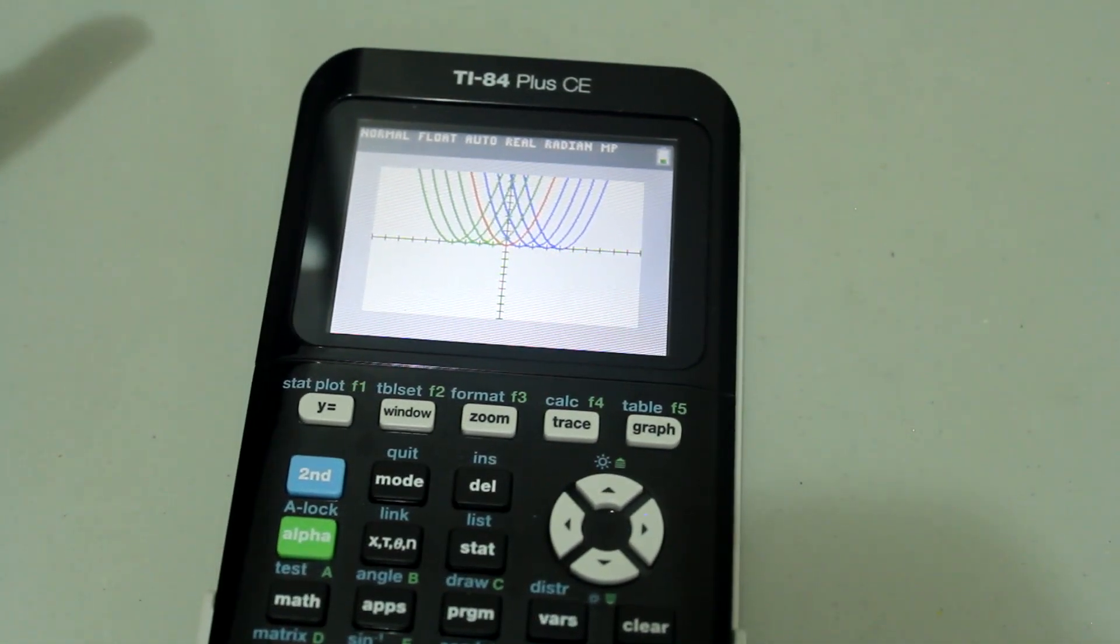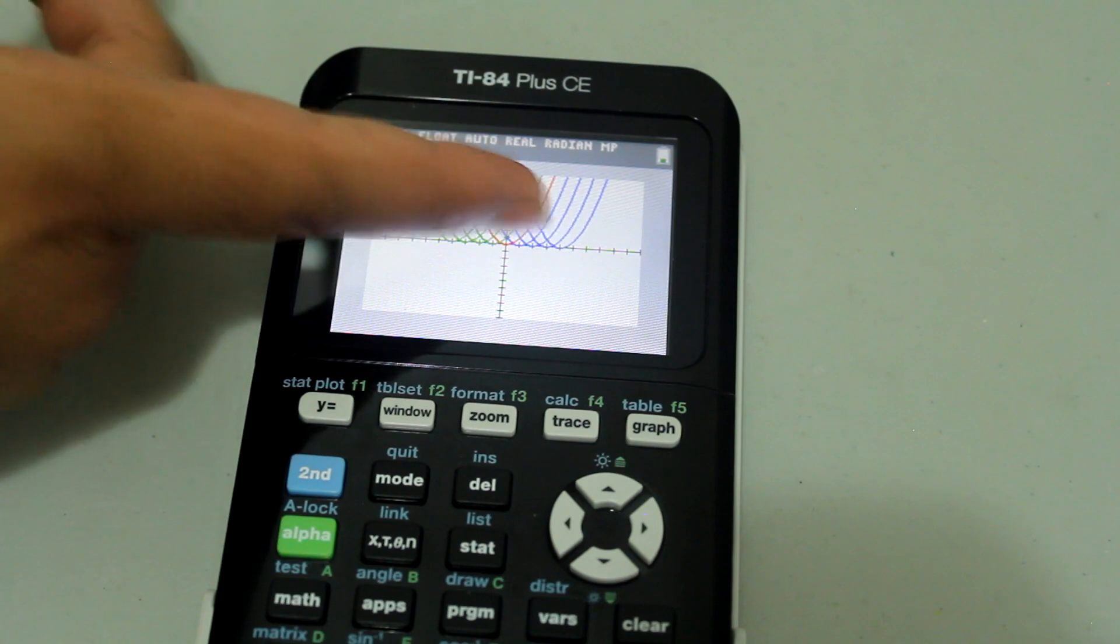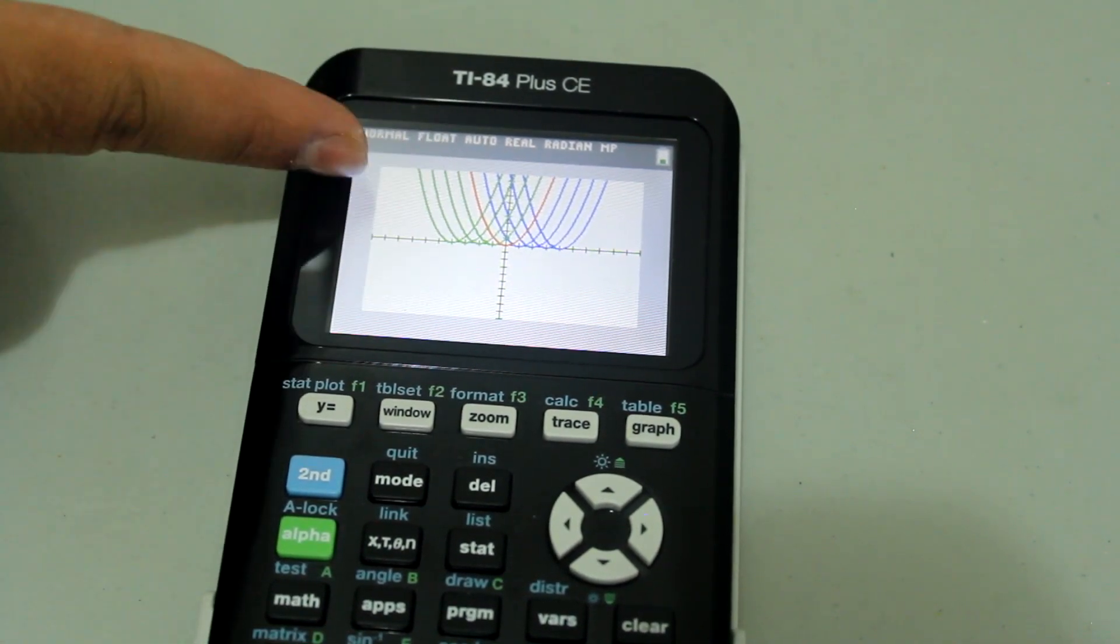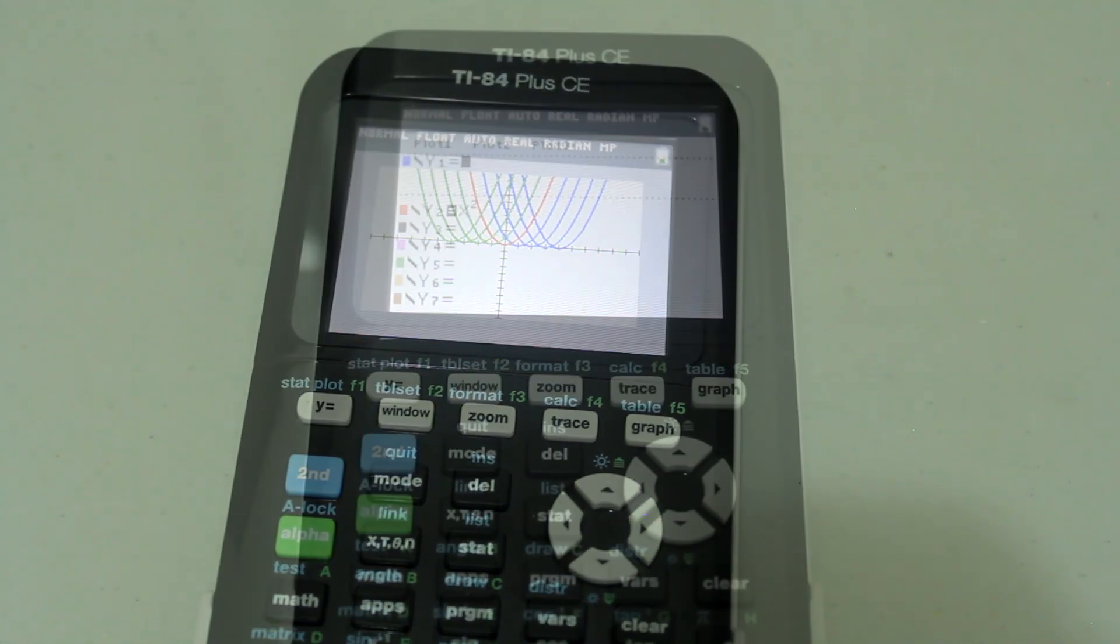And now you see that the graphs are shifted horizontally. The blue indicates a shift to the right, the green are shift to the left and the red is the original one.